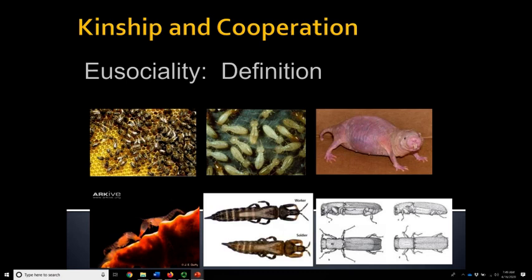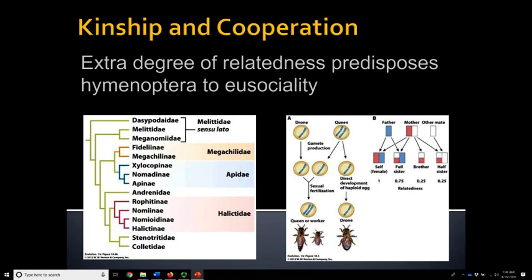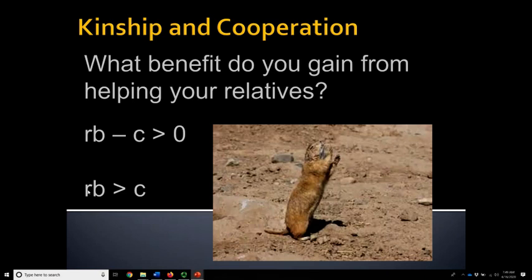It turns out by a trick of the way that hymenoptera reproduce, females are actually 75% related to one another. A sister to her brother is only 25% related. So even if you are full siblings, you are only 25% related to a full brother — a weird quirk of the way they reproduce. This means that if we go back to the equation, the degree of relatedness for sisters is higher than in most species. In most species you're 50% related to your sister, but in bees you're 75% related. So there can be a higher cost — even giving up all reproduction — if it helps your sister reproduce, because she carries 75% of your alleles.